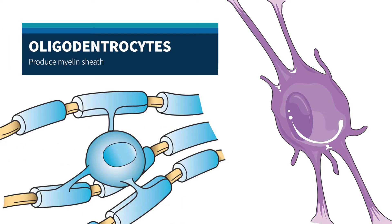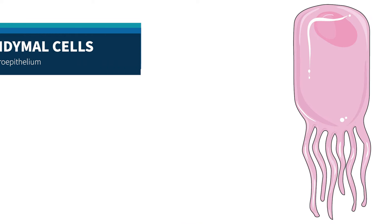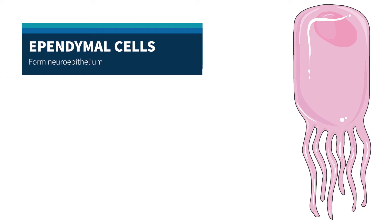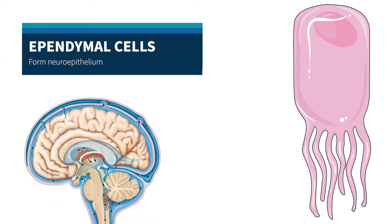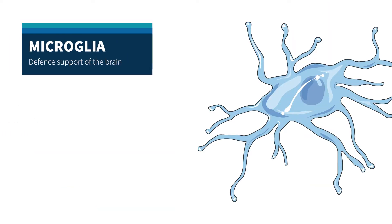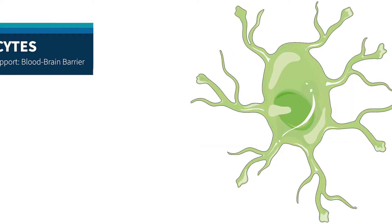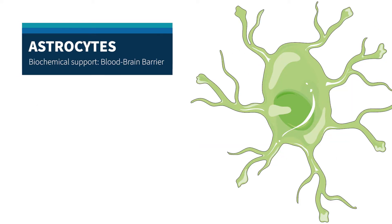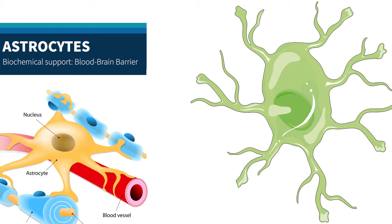Oligodendrocytes, which produce the myelin sheath to insulate the axon. Ependymal cells, which form the neuroepithelium of the brain's ventricular system and produce cerebrospinal fluid. Microglia, which are the resident macrophage cells and serve as the brain's immune system. And astrocytes, the focal cell in this study, which, among many other important functions, support the blood-brain barrier.